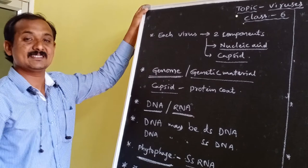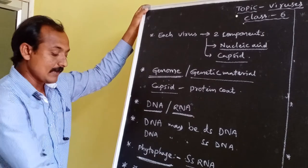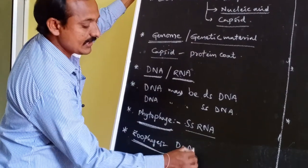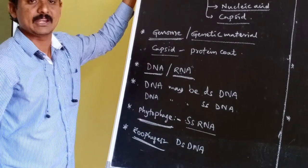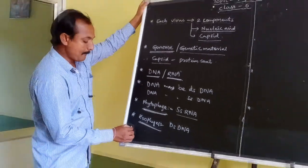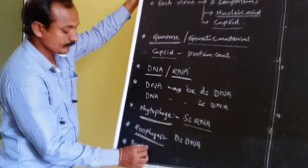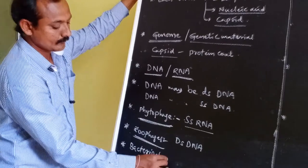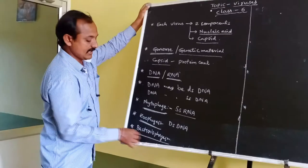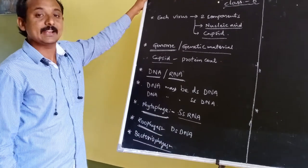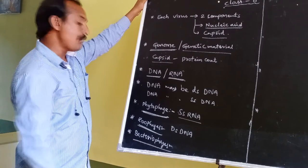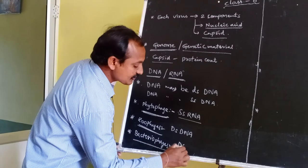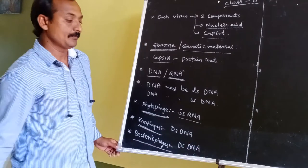Zoophages are viruses that infect animals, and they consist of double-stranded DNA as their genetic material. Bacteriophages are viruses that attack bacteria, and they also consist of double-stranded DNA as their genetic material.